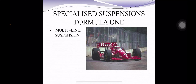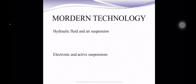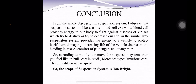Specialized suspensions include the Formula One multi-link suspension system. In terms of modern technology, hydraulic fluid and air suspensions, as well as electronic and active suspensions, are the modern types of technology being developed for suspension systems.